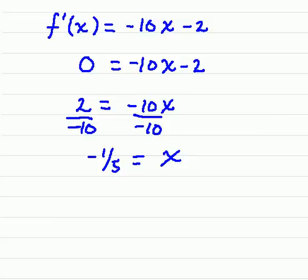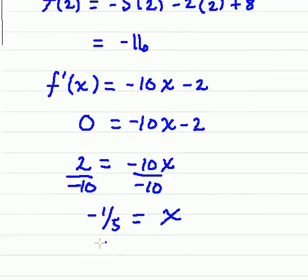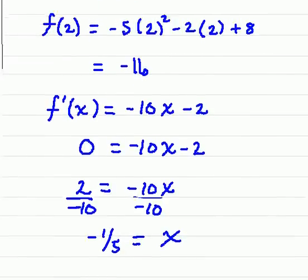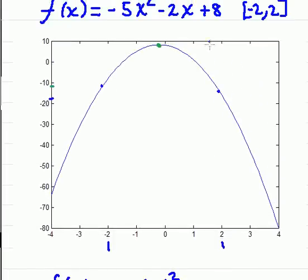Now remember that this critical value here, this negative 1 fifth, must be in our closed interval. And between negative 2 and 2, that negative 1 fifth must be in here. And it is, it's lying somewhere in here.